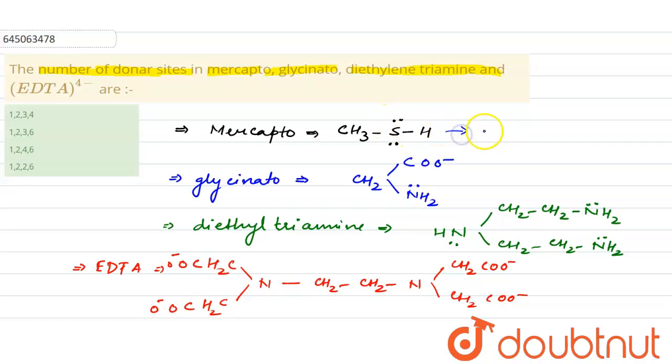Only sulfur is donor, so it is one. If you will see in the second, then there are two donor sites: one is nitrogen and one is oxygen. If you will see in the third, then there are three donor sites. All three nitrogen atoms contain lone pairs, so there are three donor sites.